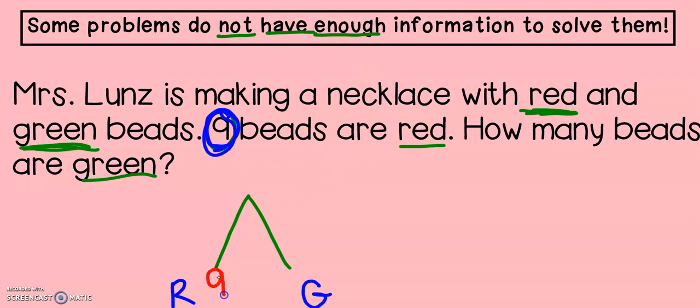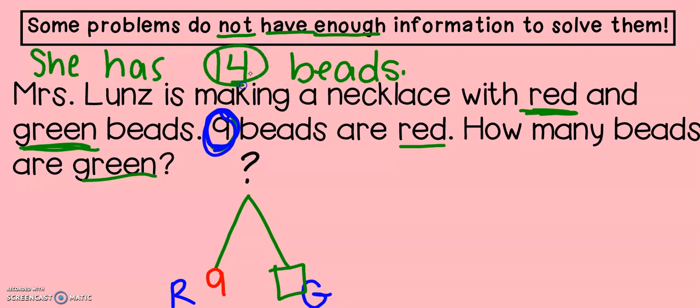I only have one number here. I know I have red beads and green beads. Now, the problem says that I have nine beads that are red. So I'm going to put a nine on this side. The question is, how many beads are green? That is my missing number. So if I look at my math mountain, my missing piece is my total. I don't know how many total beads she has. So we get to make up our own information again, second grade. How about let's say she has 14 beads. Since this is all of her beads, I know that it is the total. So I'm going to add my made-up number, 14. It's the king of the mountain.